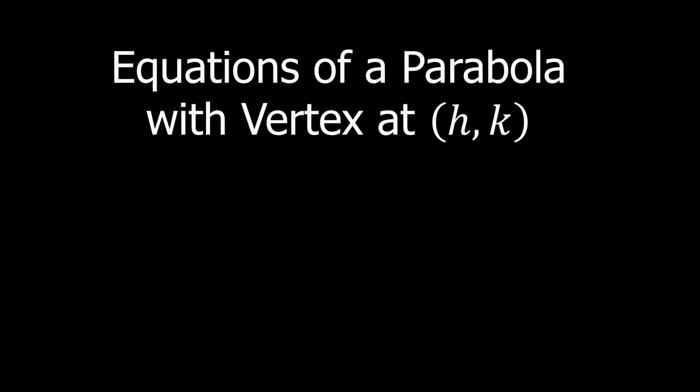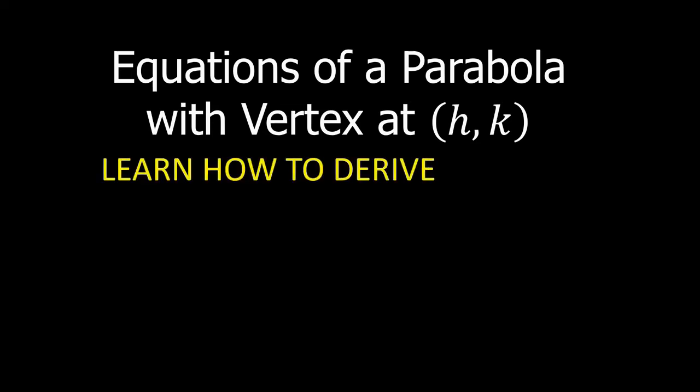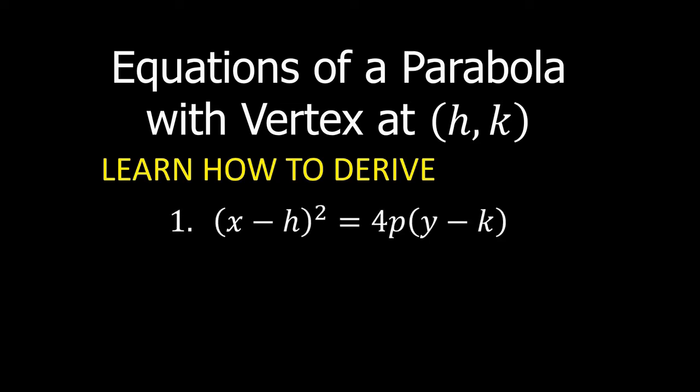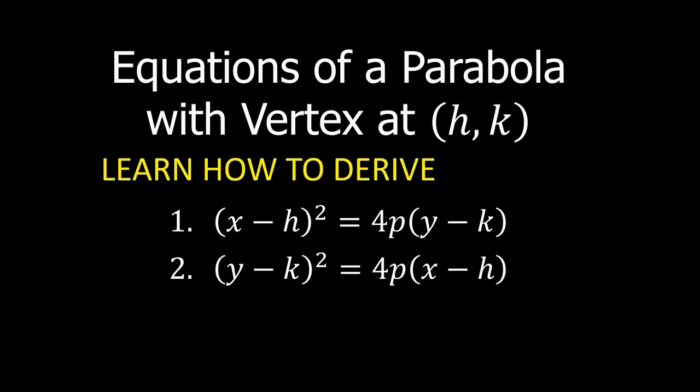Today's lesson is equations of a parabola with vertex at point h, k. We will learn how to derive the following equations. Number one: (x − h)² = 4p(y − k). Number two: (y − k)² = 4p(x − h).